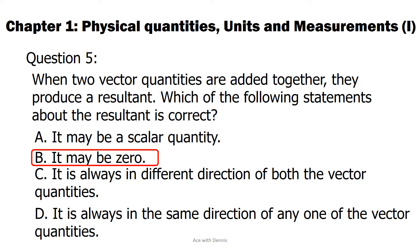For C, resultant does not always be in different direction of both the vector quantities. When both the vector quantities are either in the same direction or opposite directions, resultant will be in the same direction of any one of the vector quantities. When they are not, the resultant will not be in the same direction of any one of the vector quantities.